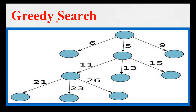Greedy search does not take into account the possible effects of future words, which can lead to sub-optimal results, especially when dealing with longer sequences. In such cases, more sophisticated search algorithms like beam search are used to improve the quality of the generated sequence.